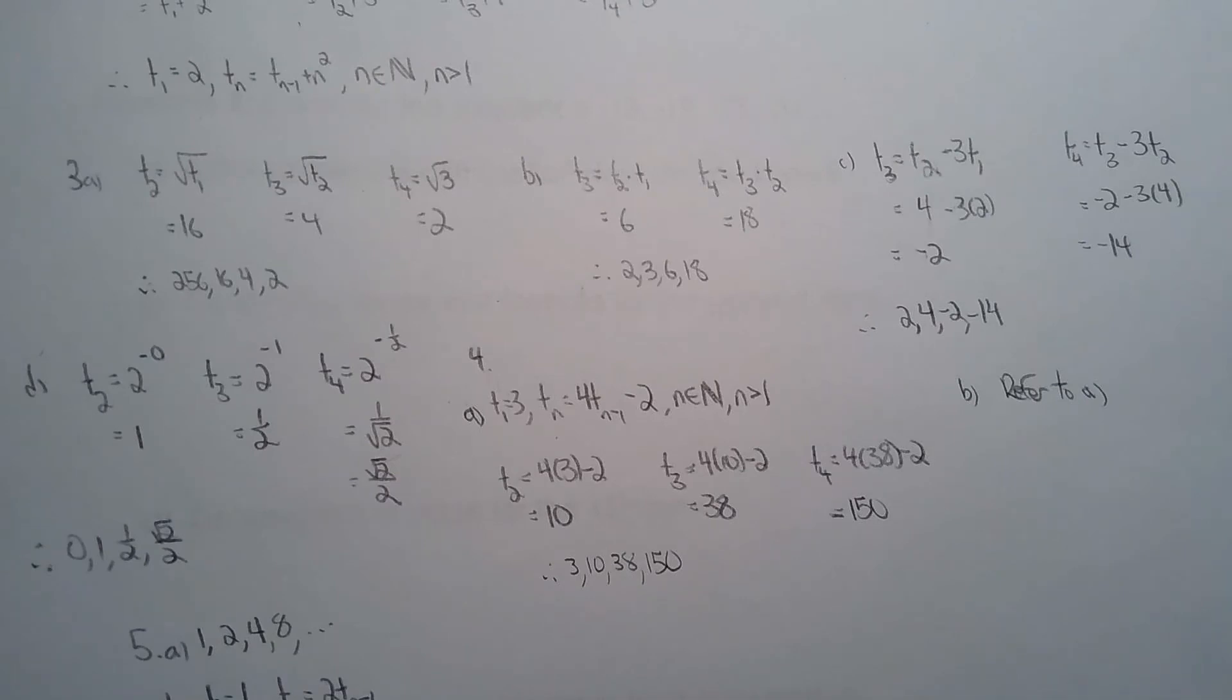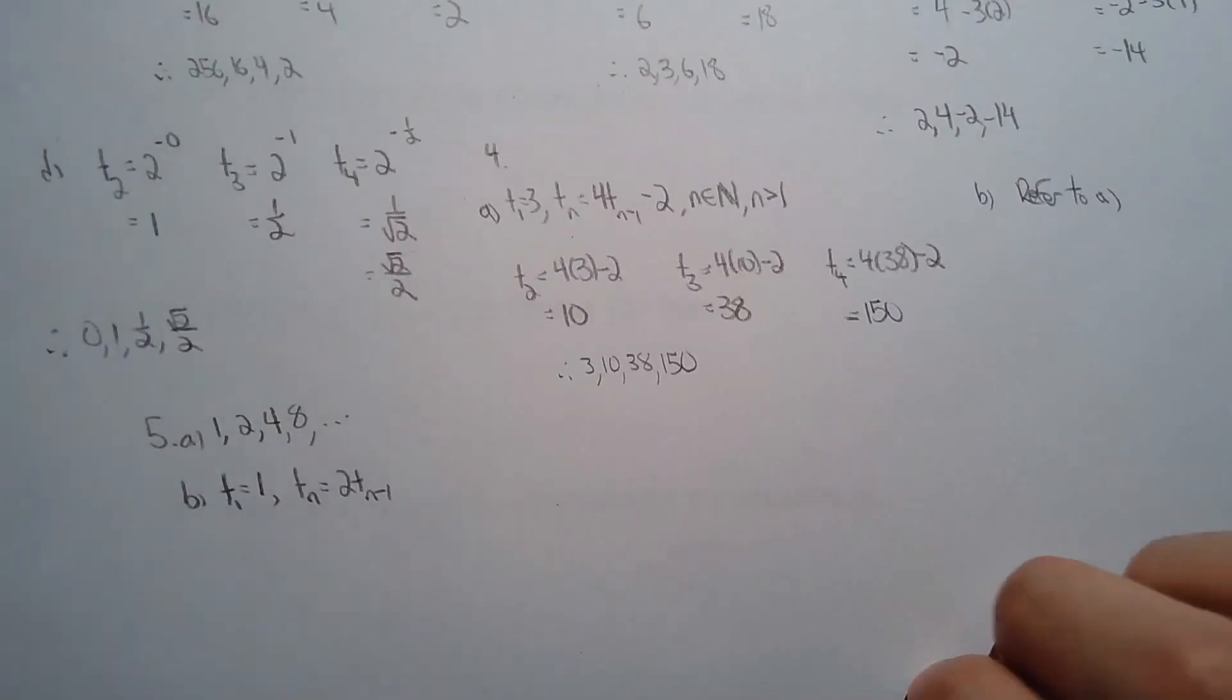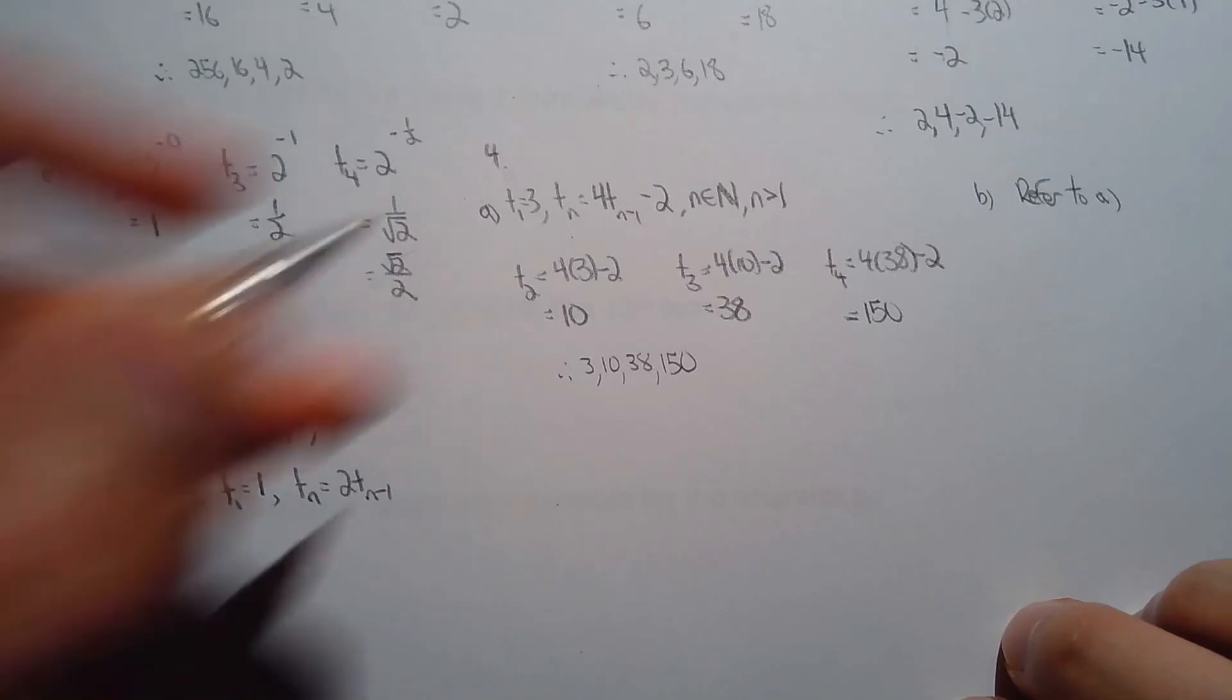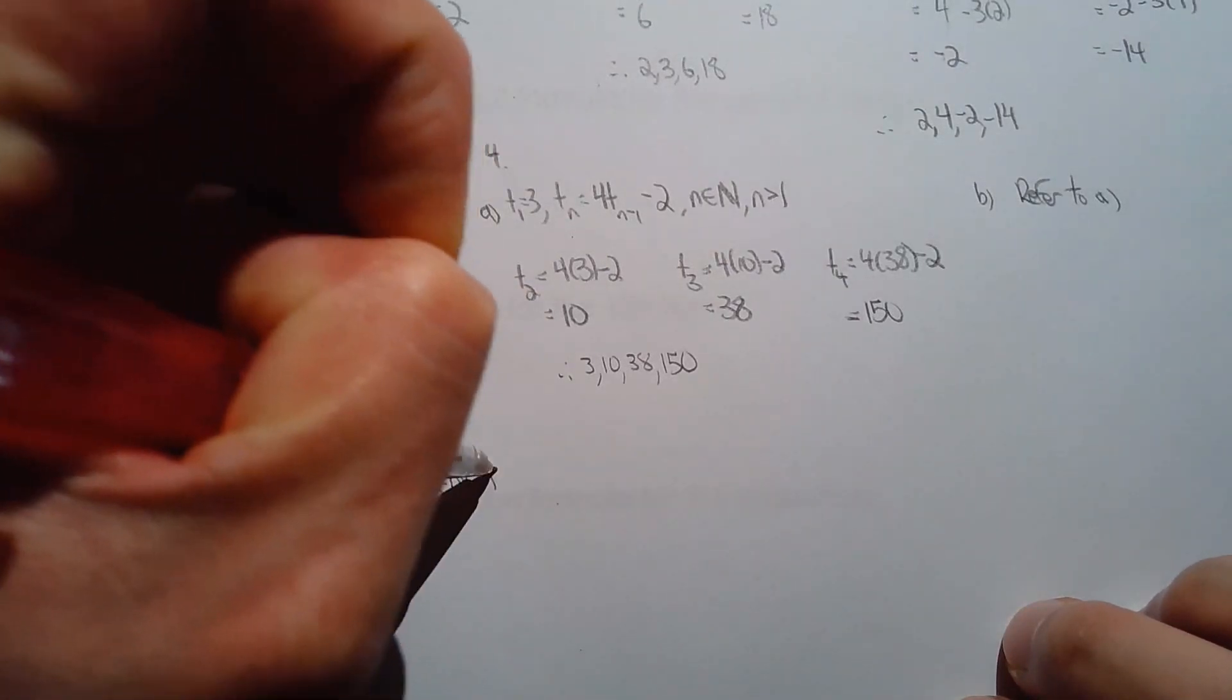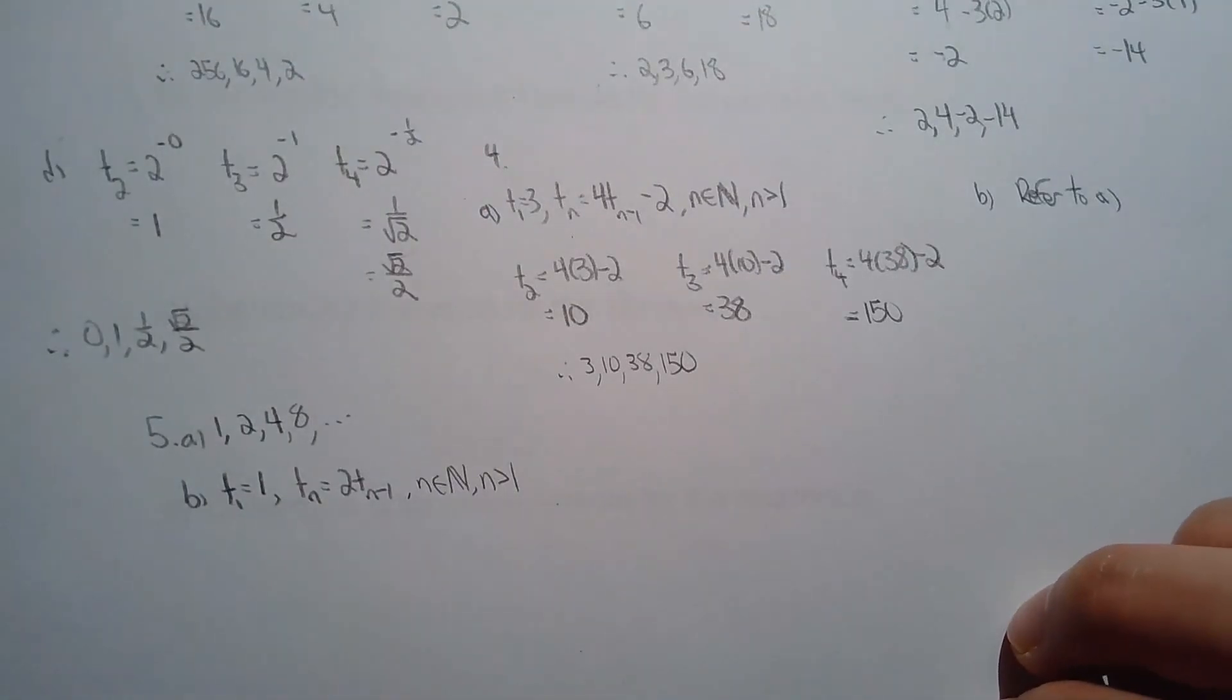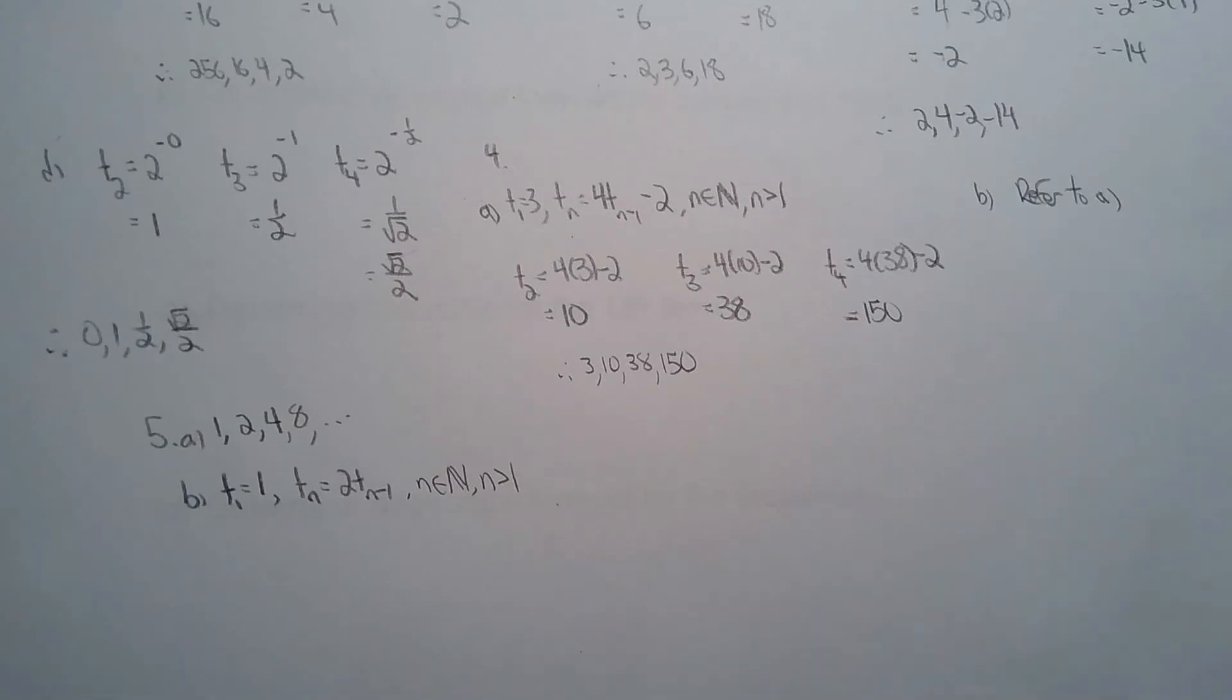And if you look at this as a recursive sequence, that means that you can find any term by taking the preceding term and multiplying it by two. And I forgot to write down that n is a natural number and n is greater than one. So please remember these details when you write the recursive formula or even when you write the explicit formula. You should indicate that n is a natural number because we're working with discrete functions in this unit.